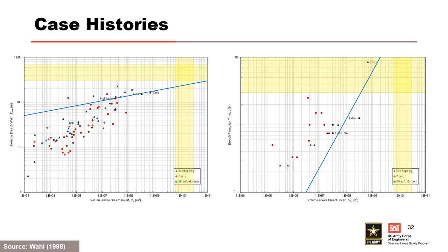Plots of average breach width and breach formation time as a function of volume above breach invert were generated from the DSO-98-004 database. The trend line is drawn through Hill Hole, Oros, and Teton dams for reference. USACE estimated breach parameters for Mosul Dam in Iraq as part of a risk assessment. Mosul Dam is a very large rock fill dam and the range of parameter estimates are highlighted in yellow. These plots illustrate that large rock fill dams will be in the upper right corner of the database of all dam failures, highlighting again the difficulty in using case studies and comparative analysis.